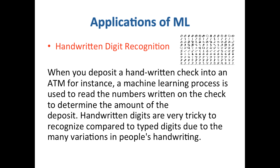Now let's look at another application: handwritten digit recognition. When you deposit a handwritten check into an ATM, a machine learning process is used to read the numbers written on the check to determine the amount of deposit. As you can see from the picture here, handwritten digits are very tricky to recognize compared to typed digits due to the many variations in people's handwriting. By being presented with lots and lots of examples of these different variations of handwritten digits, a machine learning algorithm learns and recognizes those digits.